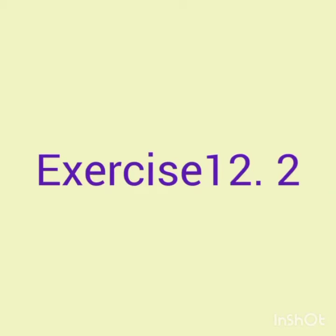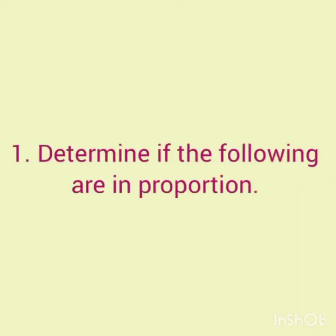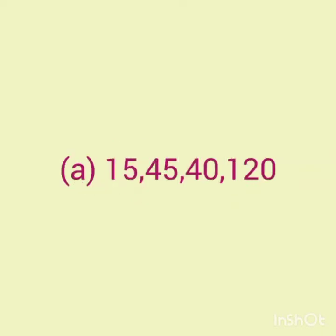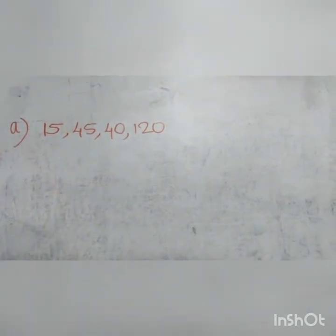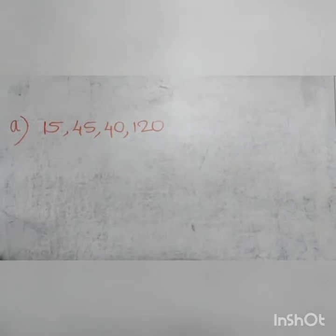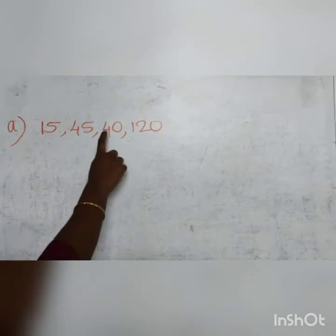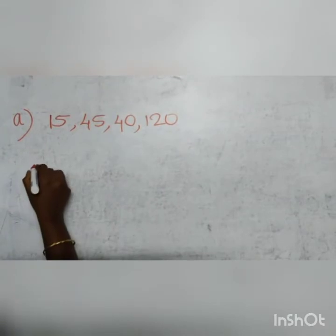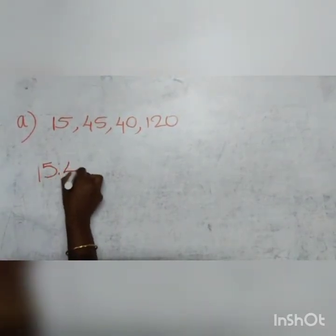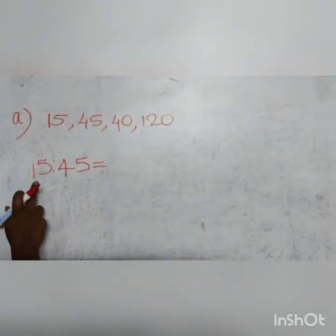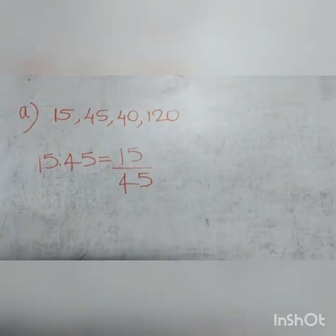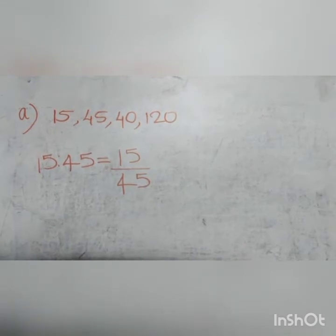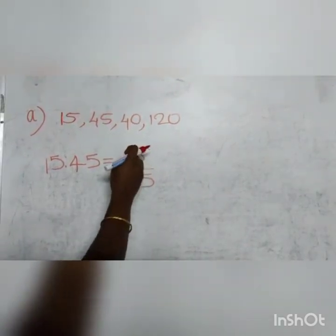We can learn more about ratios by solving questions from exercise 12.2. First question: determine if the following are in proportion. Question A: 15, 45, 40 and 120. To check if 15, 45, 40 and 120 are in proportion, first we find the ratio of 15 and 45, then find the ratio of 40 and 120. We write this ratio in fractional form, that is 15 by 45. We know that both 15 and 45 are multiples of 15, so we can divide both numerator and denominator by 15.